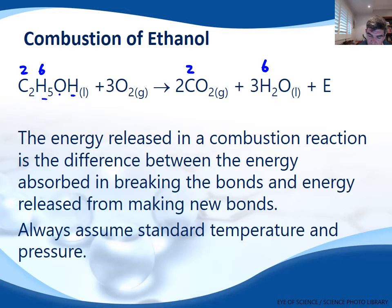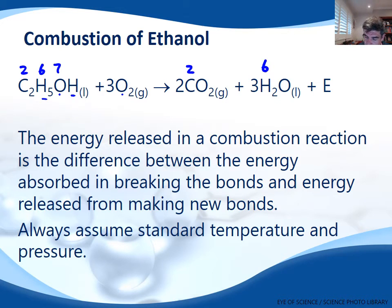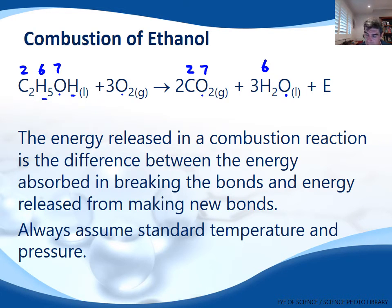We have one oxygen here and three twos are six, so we have seven oxygen atoms in total on the left. And we've got two twos are four, and another three is seven — four and three is seven — oxygen atoms on the right. So our equation is balanced, and energy is a product.